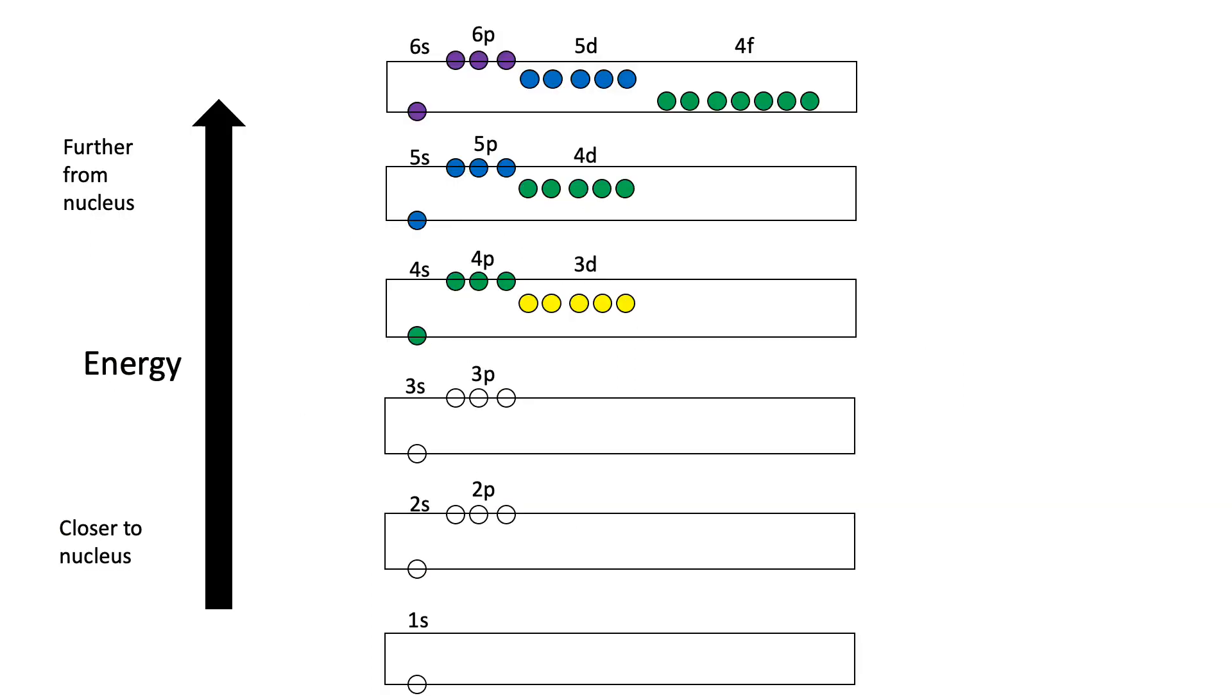This is an energy level diagram we built in an earlier video using the quantum number rules. When writing electron configurations, place the electrons in the lowest energy orbital first, then add electrons into higher energy orbitals as necessary.